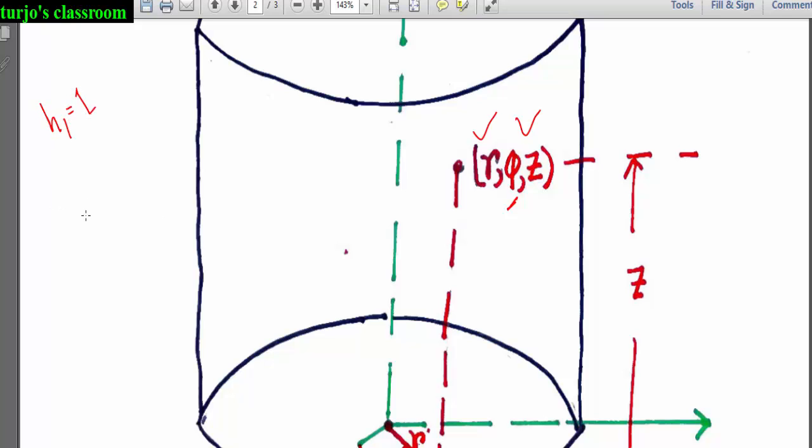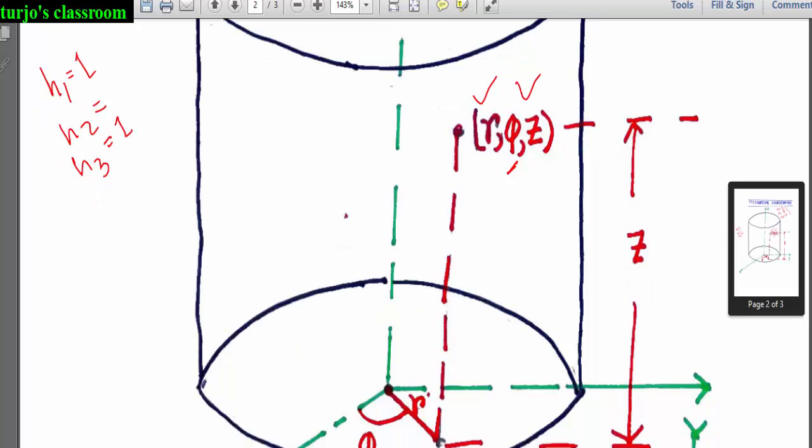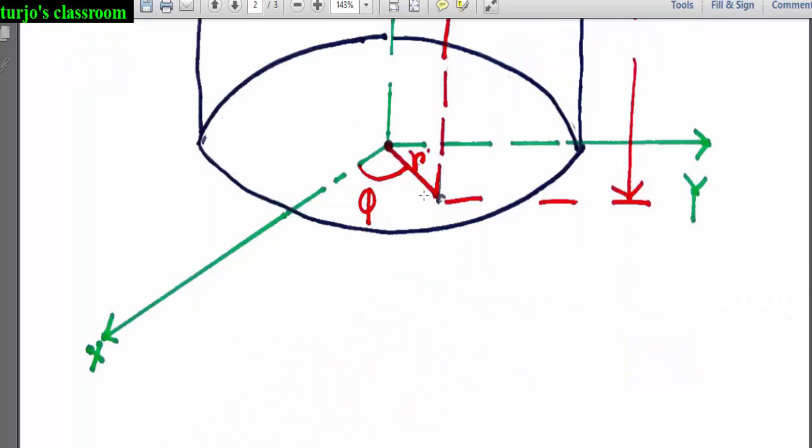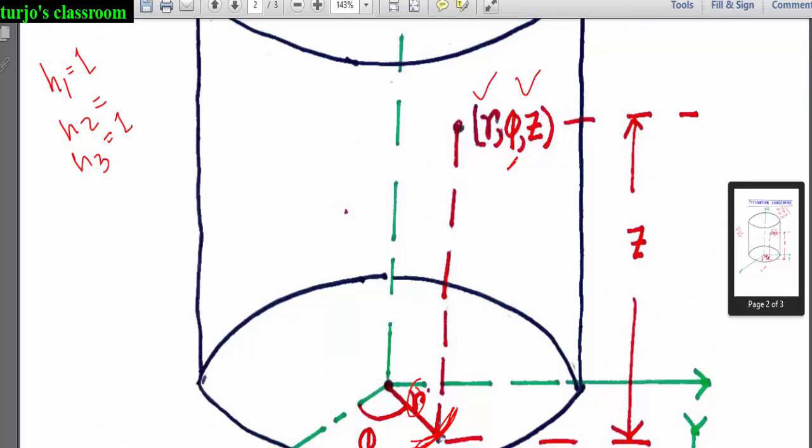The only metric conversion coefficient that is required here is for phi. So here h1 is 1 and h3 is also 1. What about h2? Just look here. If we rotate r in this way, just keep in mind the s equals r theta formula. If we rotate r in this way, then the arc formed here tells us that this angle phi, or any differential angle change in phi, can be converted into a differential length change if we only multiply it with r. Here so h2 will be r.